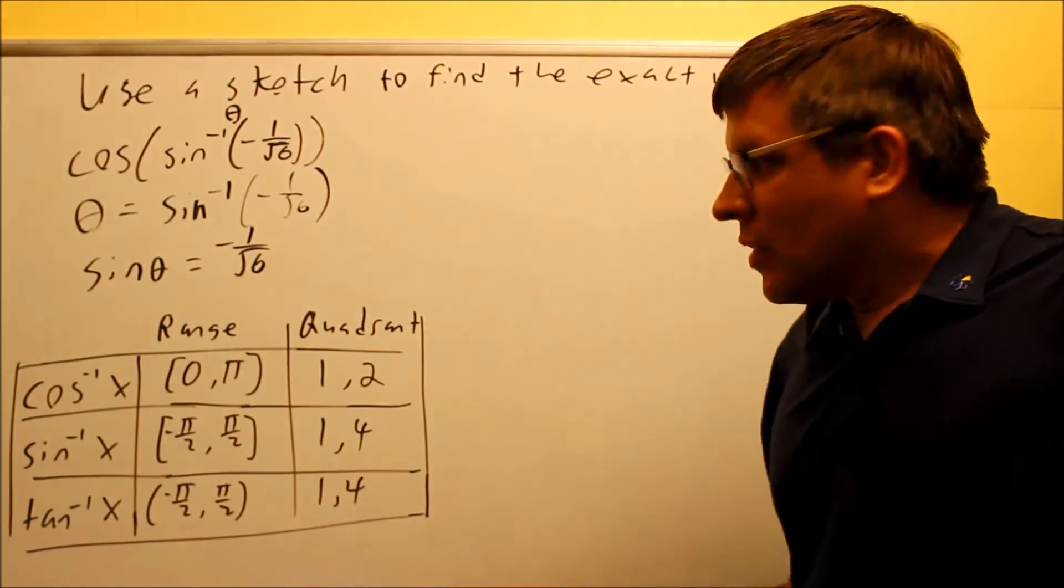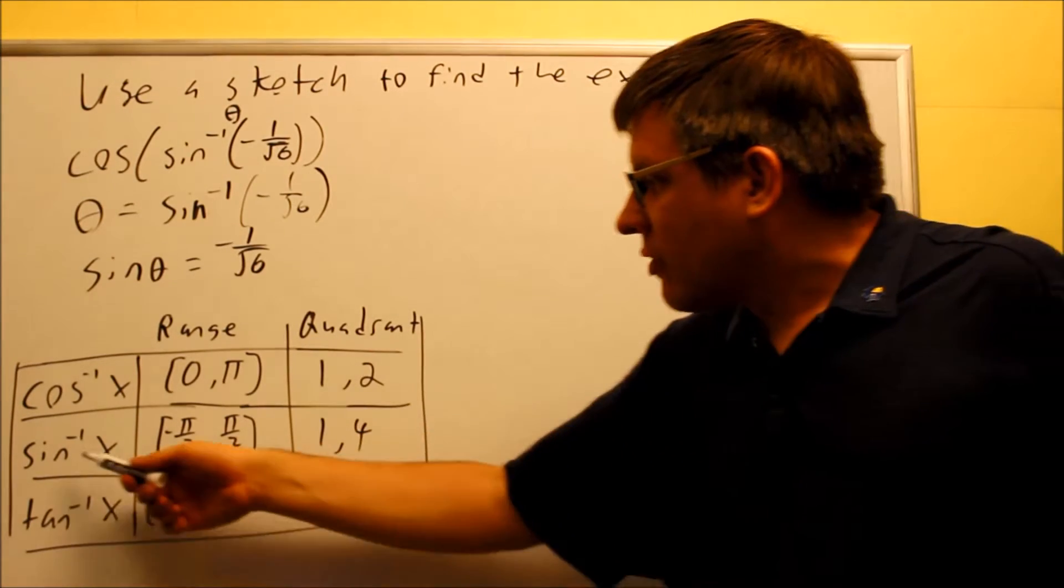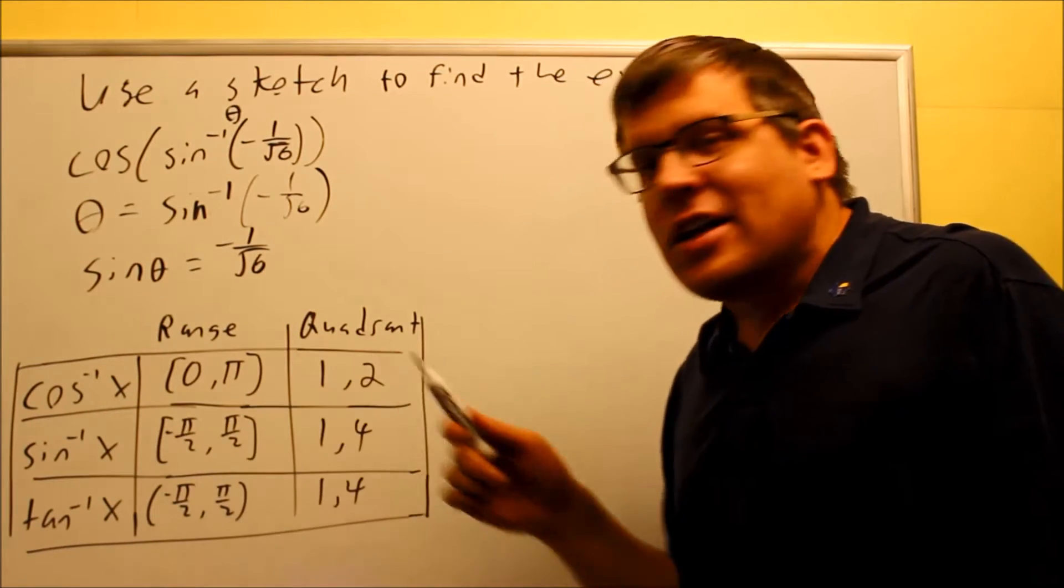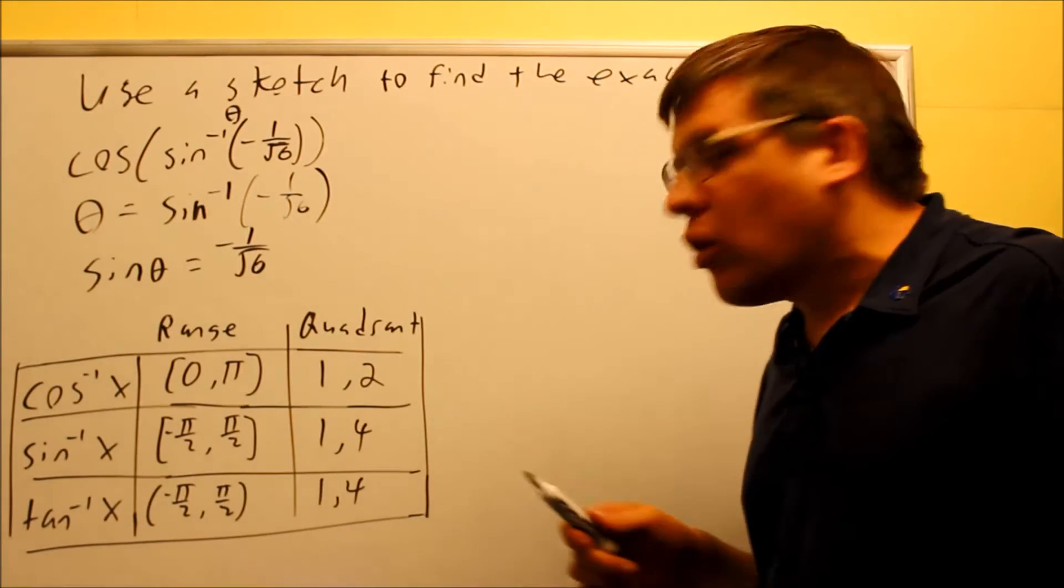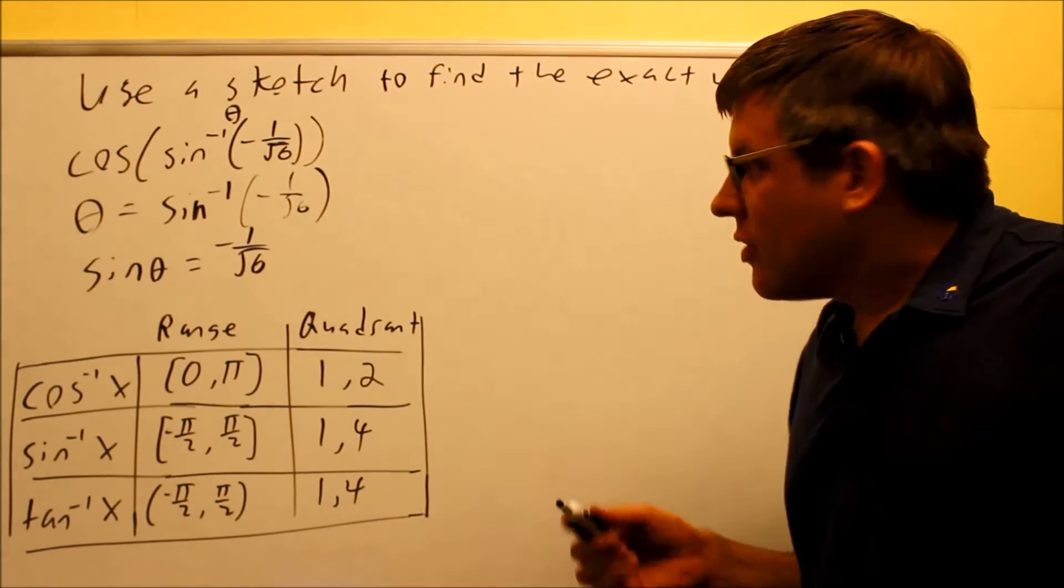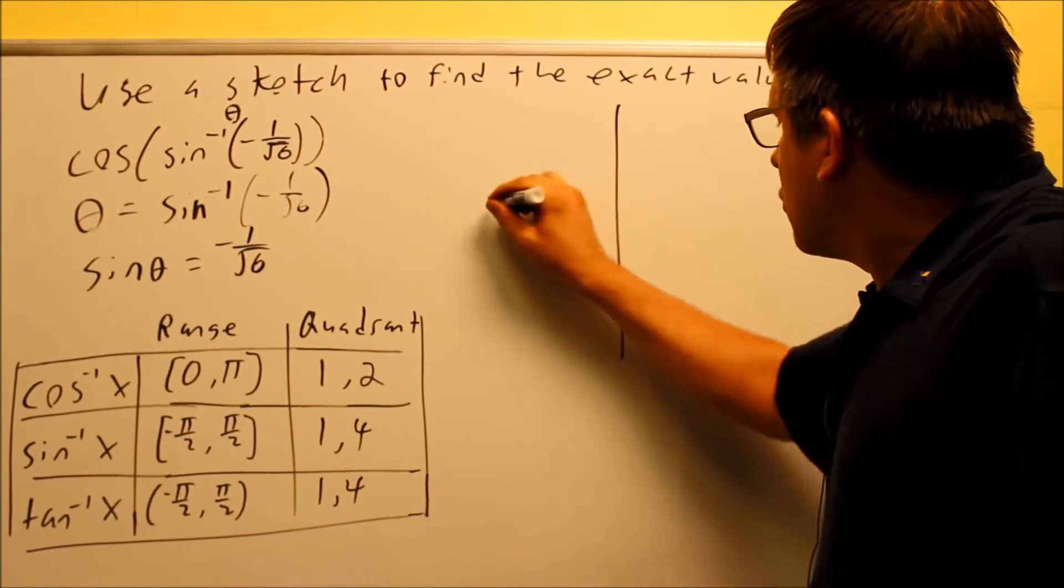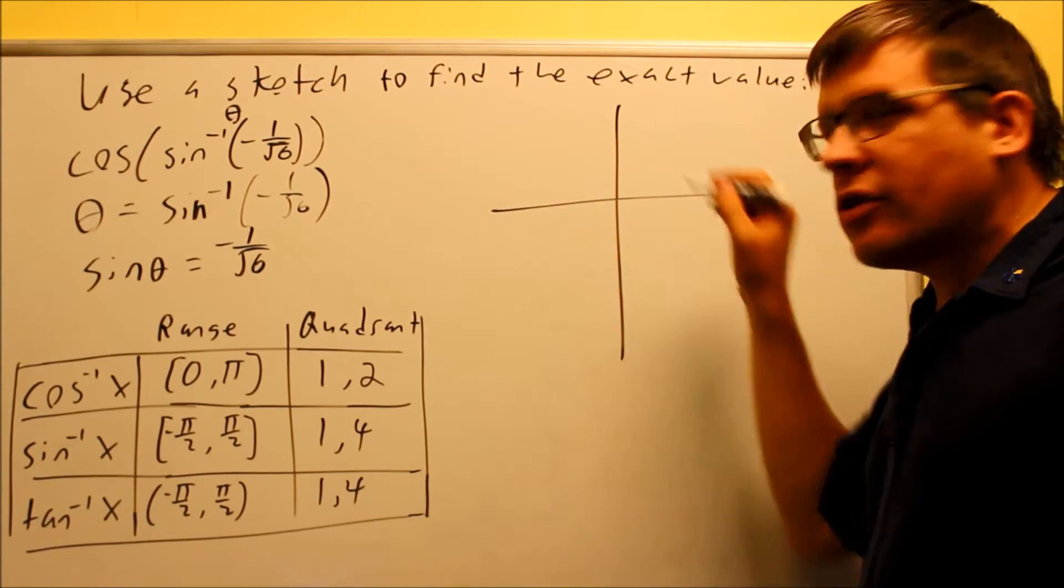That's an inverse sine. If I look at my table that I have here, inverse sine, the range is between negative 90 and 90, and that translates into quadrant 1 or quadrant 4. So that's going to tell me that I can draw the triangle in either the first quadrant or the fourth quadrant.